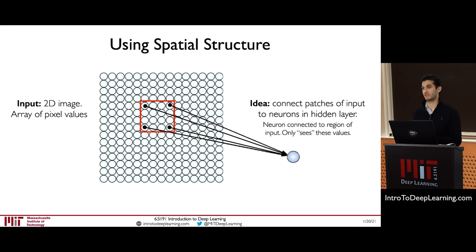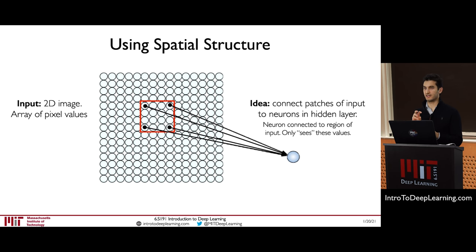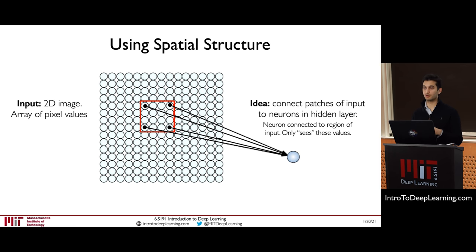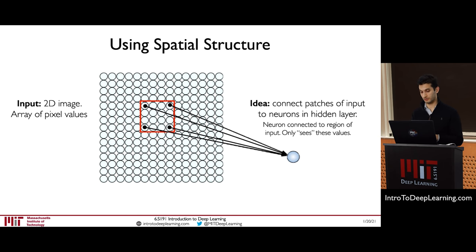To preserve spatial structure, let's keep our image as a 2D array of pixel values rather than collapsing it. One way to use the spatial structure is to connect patches of our input — not the whole input, but just patches — to neurons in the hidden layer. Each neuron only sees the values coming from the patch that precedes it. This not only reduces the number of weights in our model but leverages the fact that spatially close pixels are likely to be related and correlated.